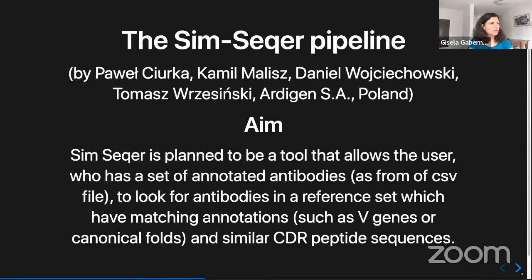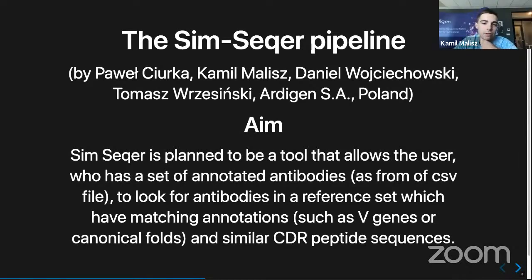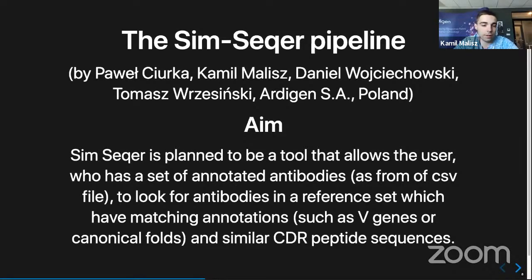We also have the SimSeeker pipeline. Hello, my name is Kamil, and we have quite a large team from Archigen — me, Pavel, Daniel, and Tomek. We are working on the SimSeeker pipeline, whose main aim is to allow an end user who has a set of annotated antibodies, for example in a CSV file, to look up antibodies in a reference set that match annotations such as V-gene canonicals or other annotations.